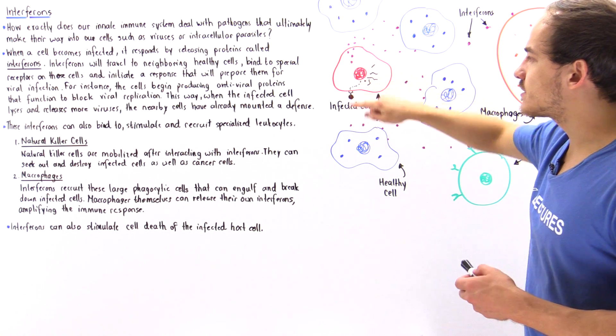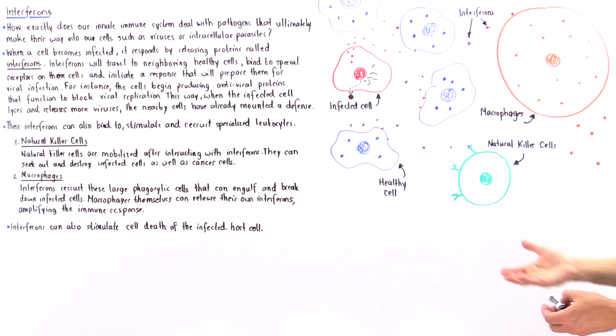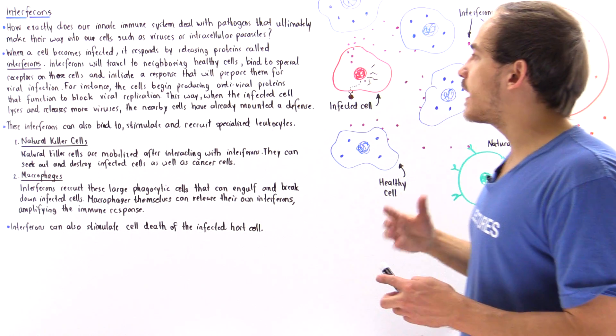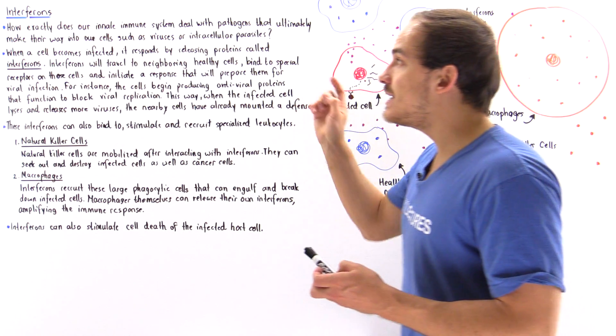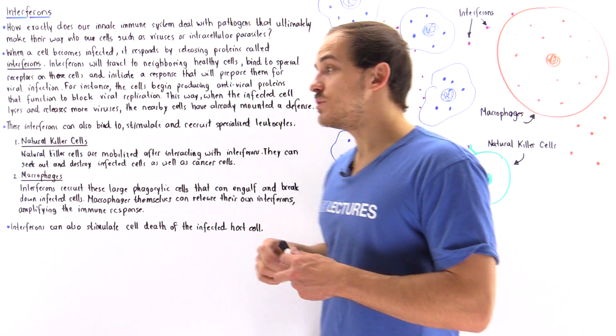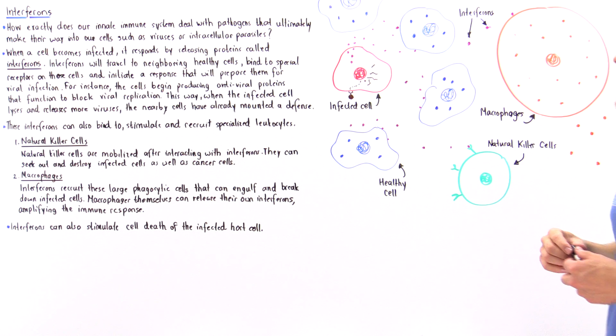So the virus injects some type of RNA or DNA into that cell infecting that cell. Now how exactly does our innate, non-specific immune system deal with these types of viral and parasitic infections?